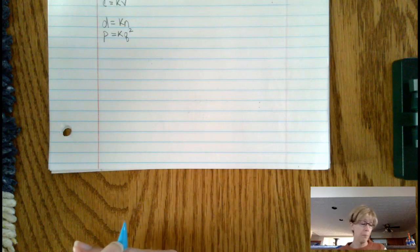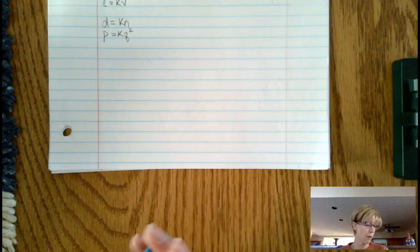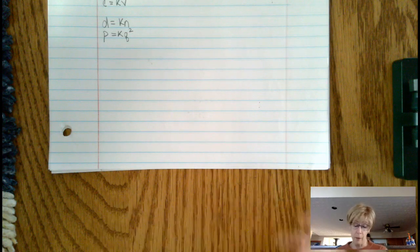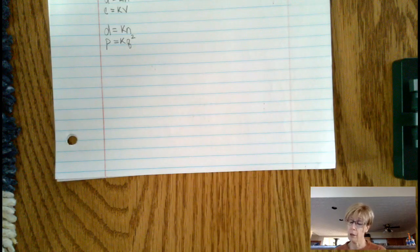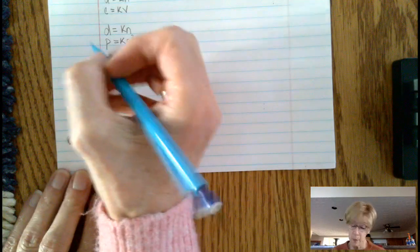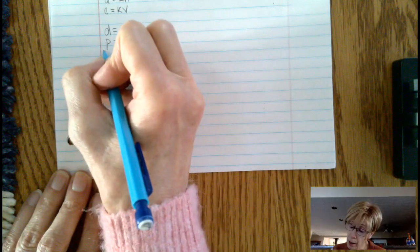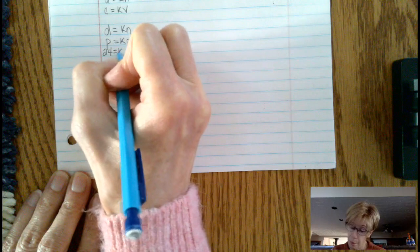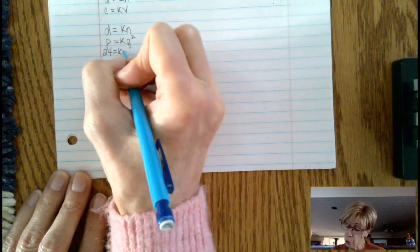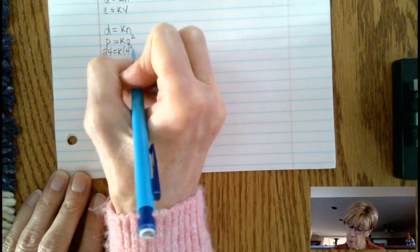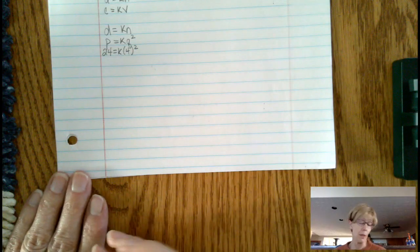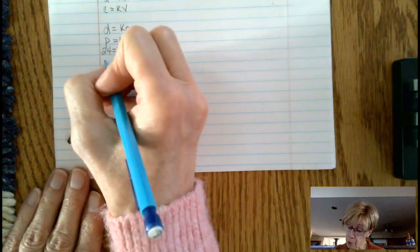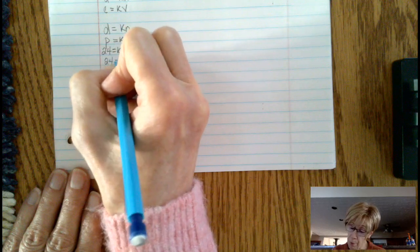We do have some values here to put in. The problem says if p equals 24 when q equals 4, so we need to square that. Now we're going to solve. This becomes 24 equals k times 16.